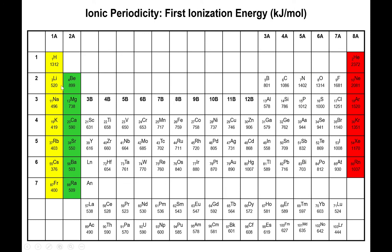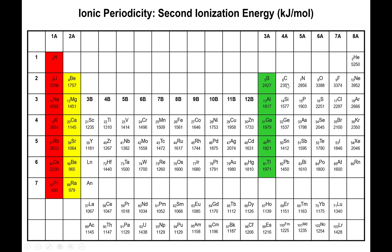For the first ionization energy, the alkali metals have the lowest values — as expected, since ionization energy increases left to right — and the noble gases have the largest values. The alkaline earth metals show an intermediate value. When you go to the second ionization energy, the groups shift: no longer are the alkali metals the ones with the smallest ionization value — in fact, by the second ionization energy, they have the largest. The red block of noble gases has effectively moved to the halogens, and the alkaline earth metals become the ones with the lowest values, with the boron group showing the intermediate value.